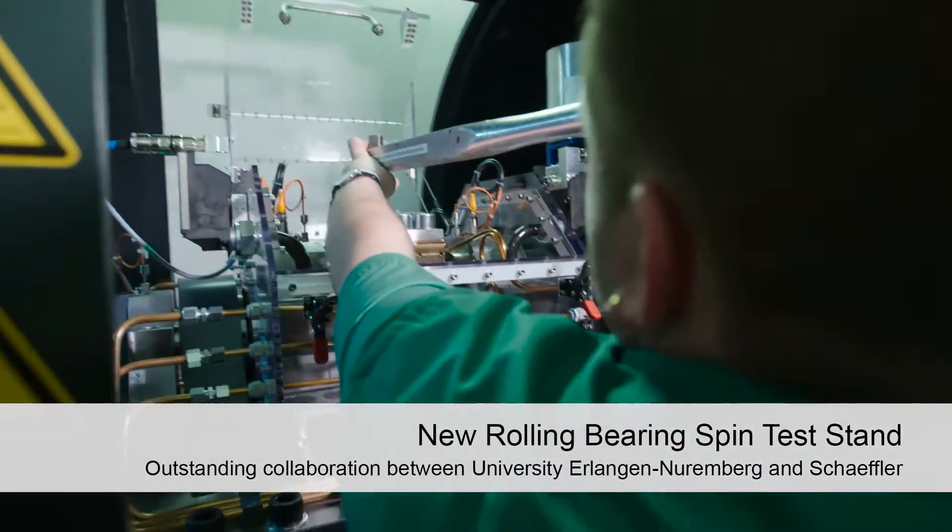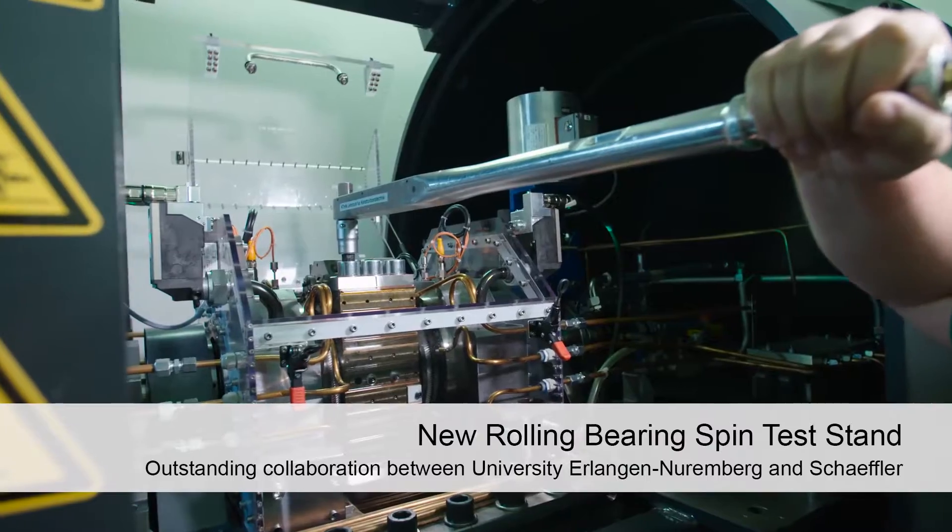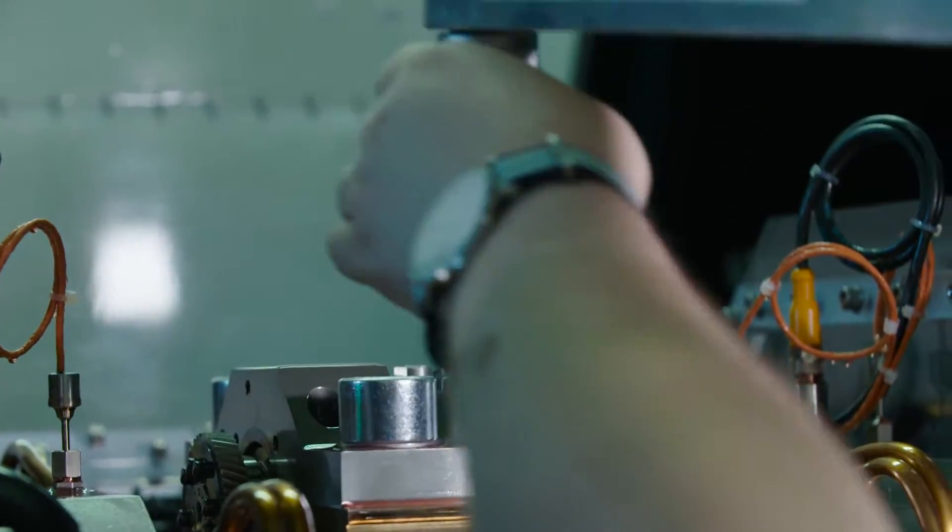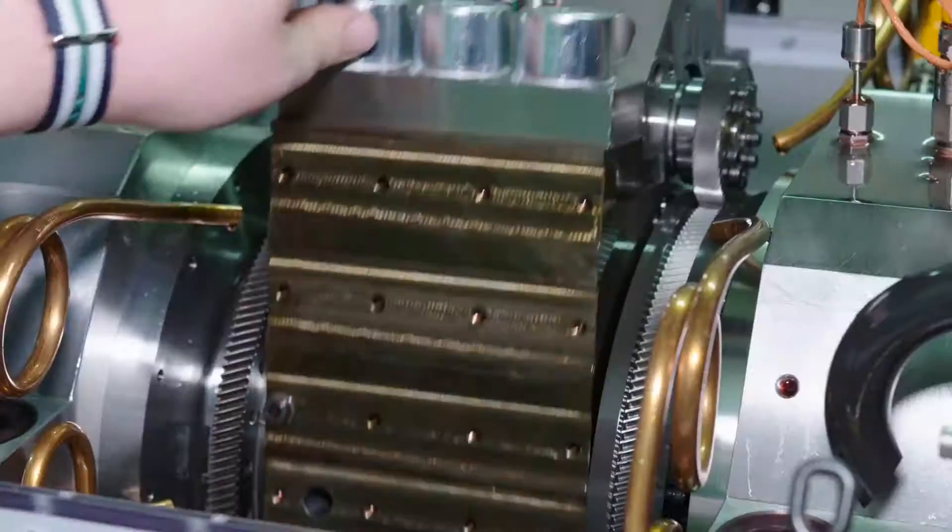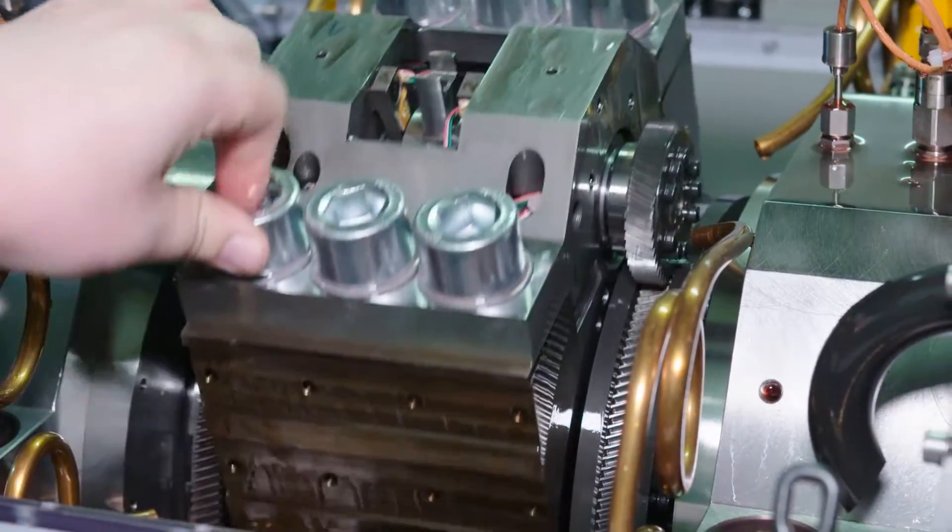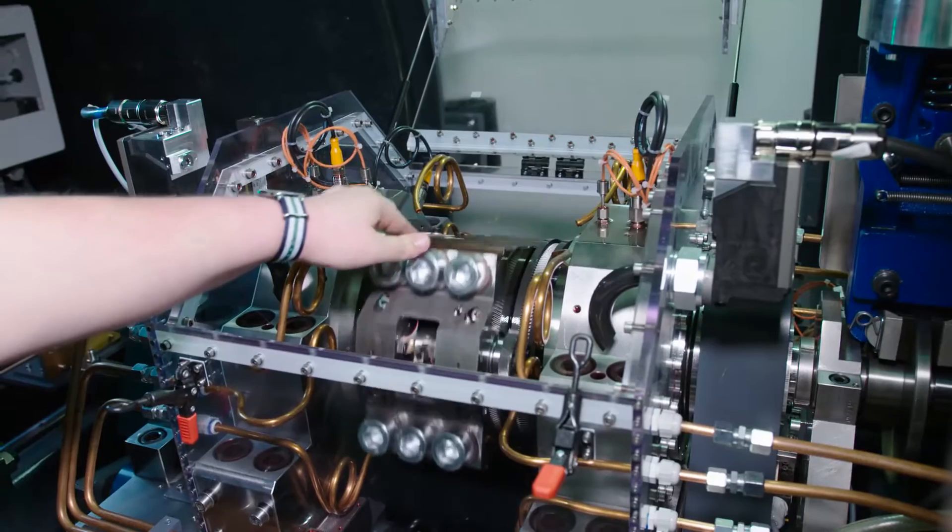The bearings in the new rolling bearing spin test stand at the Friedrich Alexander University of Erlangen-Nürnberg have to withstand a great deal more. They are subjected to up to 3000G in the planetary gear on the test stand, and this is carried out for a specific purpose.